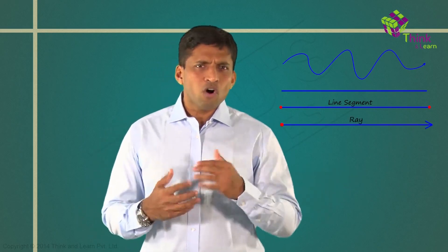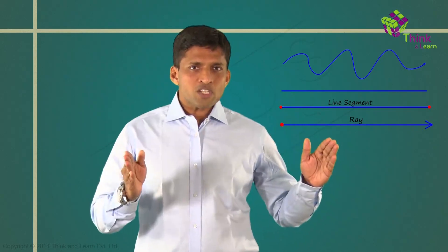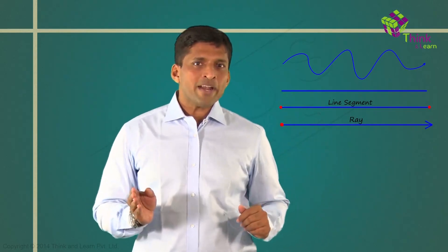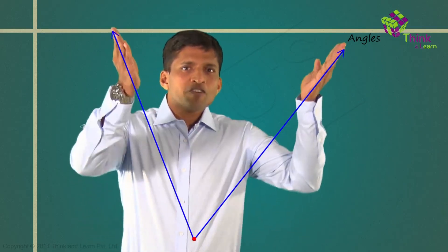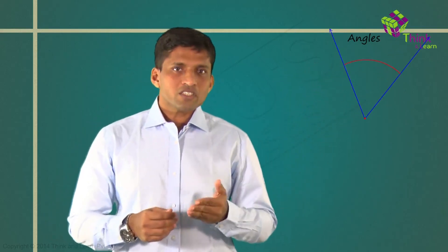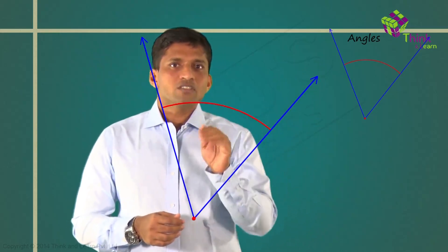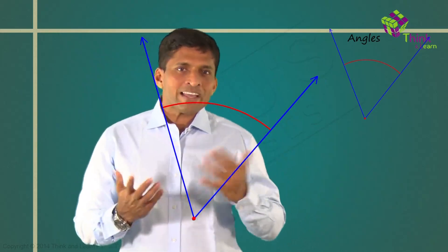These are things you all know — just revising. When there are two endpoints, we call it a line segment; one endpoint, we call it a ray. How do we get an angle? Two rays emerging from a common point give you an angle. Another way to look at it: take the first ray and rotate it — you get the same angle. So angles are formed by two rays with a common point.